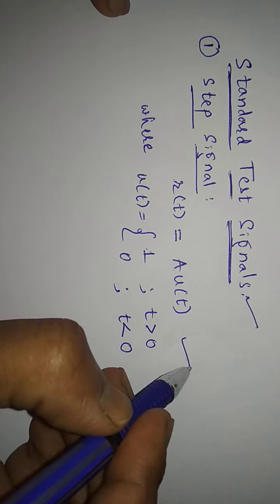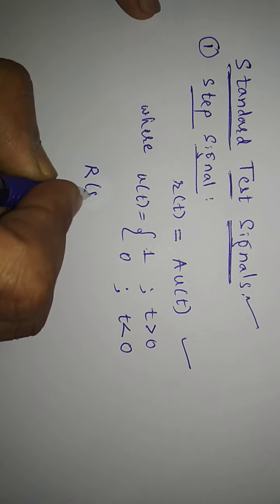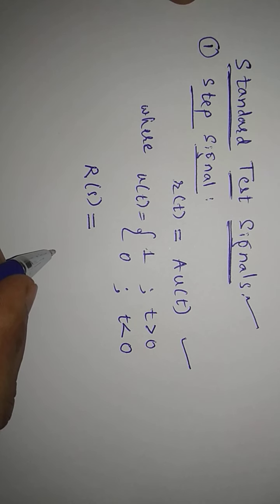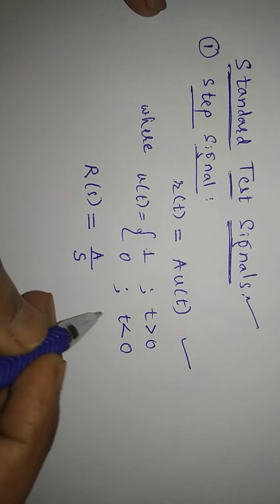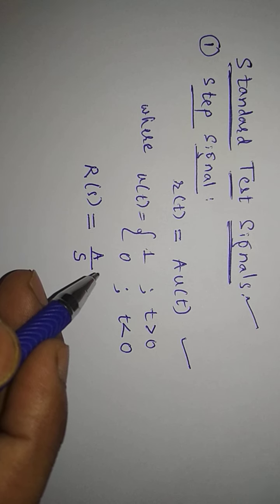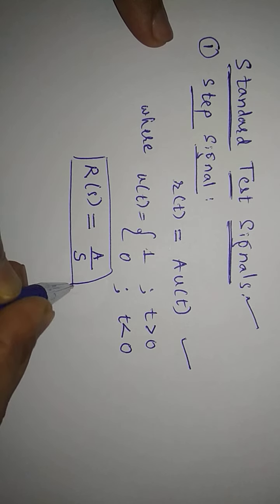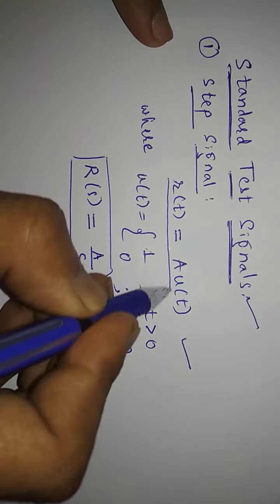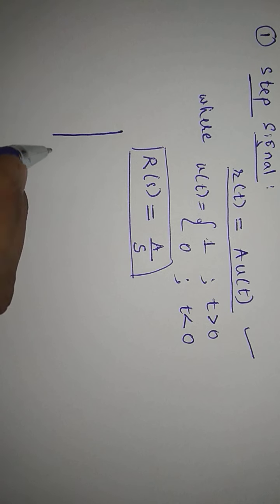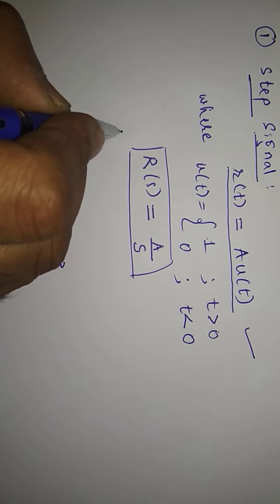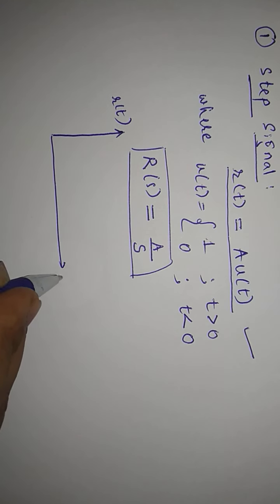The definition of step signal is r(t) = A·u(t). I should also know the Laplace transform of step signal, which is R(s). The Laplace transform R(s) is equal to A divided by s, because u(t) equals one, and the Laplace transform of one is 1/s. This is the Laplace transform of the step signal. So using the definition r(t) = A·u(t), if I want to sketch the signal, the y-axis is r(t) and x-axis is time t.